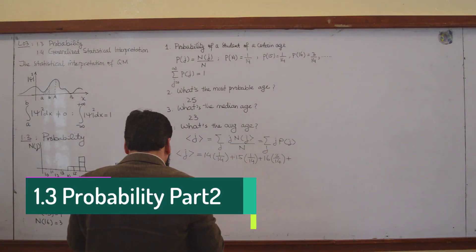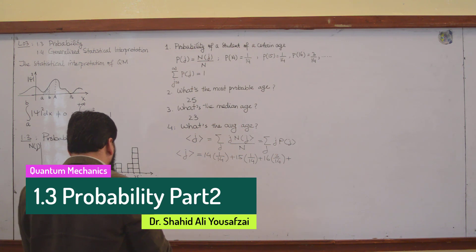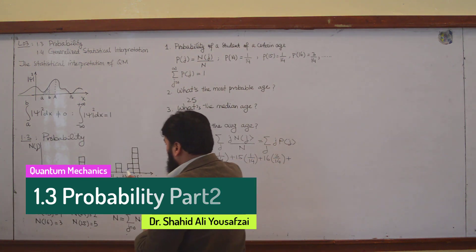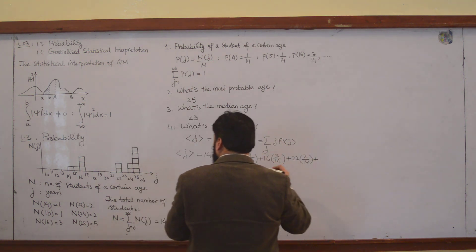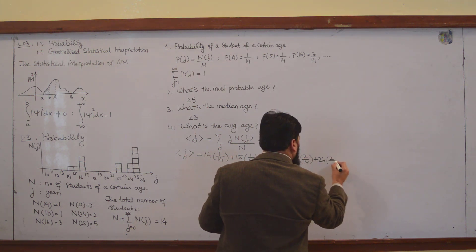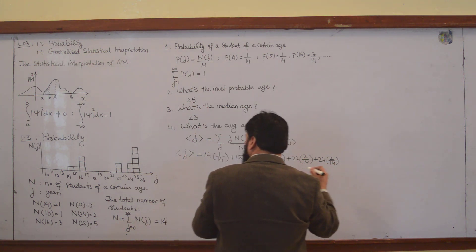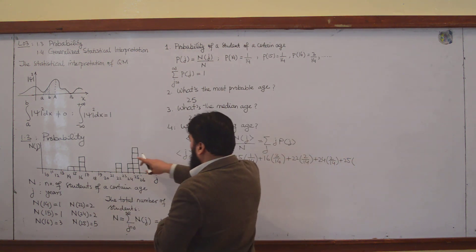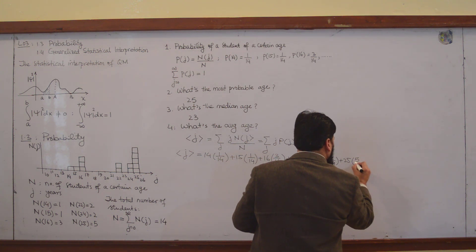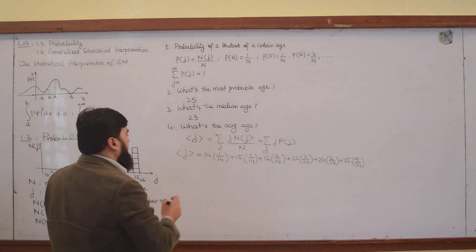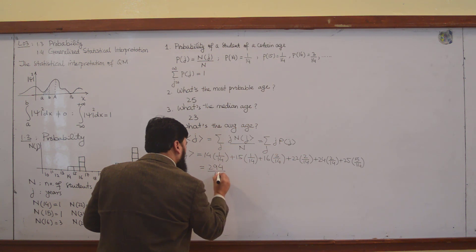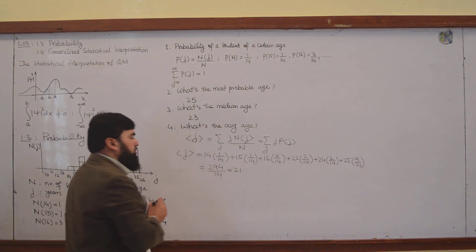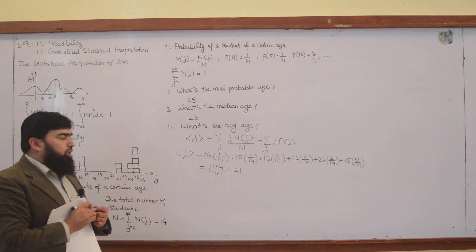Similarly, after 16 we write 22, and 22 is 2×14 + 24, and 2×14 + 25 times 5/40. When you add up all these you will get 294/14, and this is equal to 21. So the average age comes out to be 21.